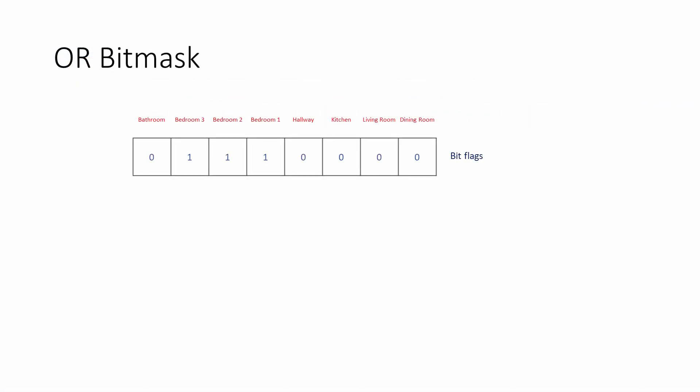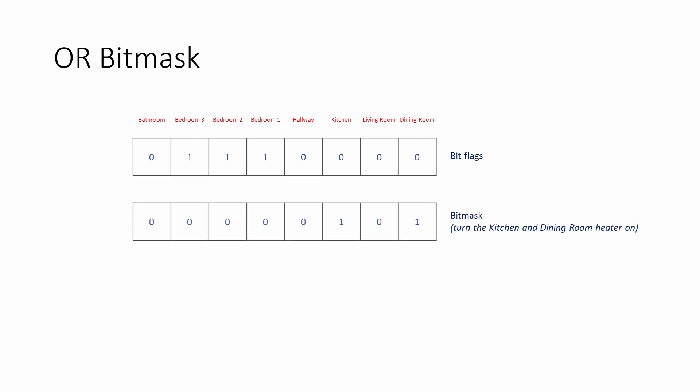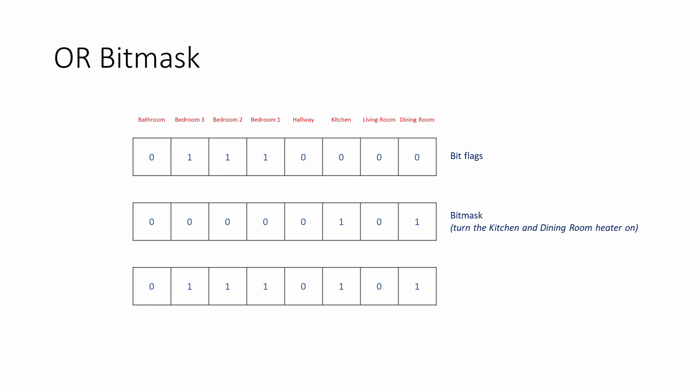The OR operator is particularly useful when it comes to manipulating bit flags with bitmasks. Consider for example the central heating system in a house with eight rooms — this system was introduced in the previous video about the AND operator. A bitmask can be applied using the AND operator to check if specific heaters are on and to turn them off if necessary. This time a bitmask is going to be used to turn the kitchen and the dining room heaters on, leaving the other rooms as they are. The bitmask is applied using the OR operator — notice that the bitmask contains all zeros except for ones at the kitchen and dining room positions. When the OR mask is applied, the resulting set of heaters that are on now includes the kitchen and the dining room, and this result can be used to modify the original bit flags.